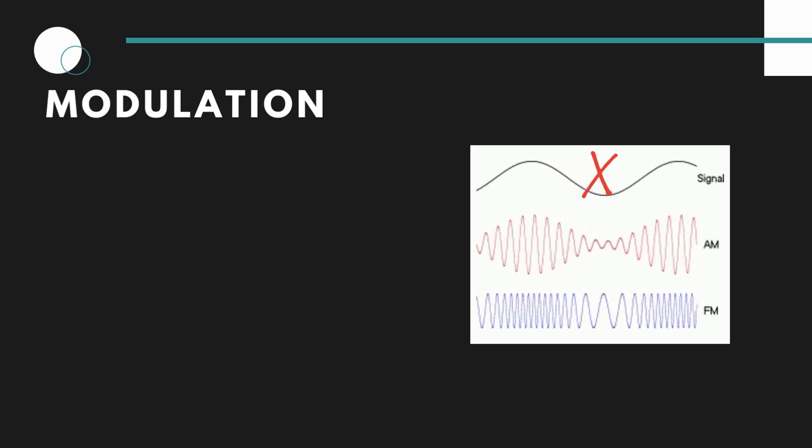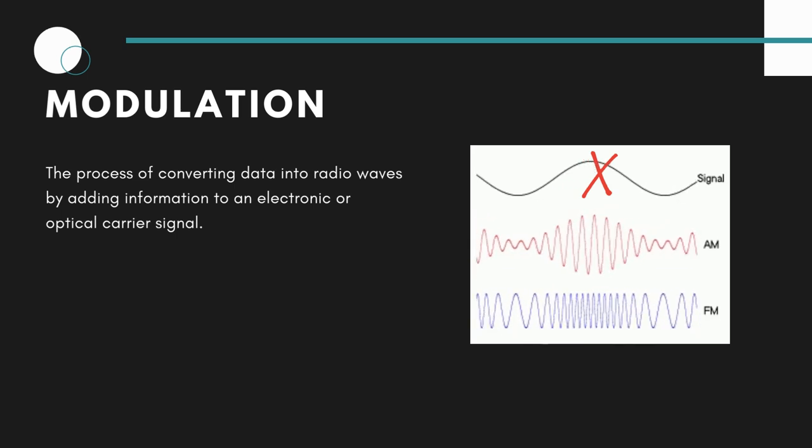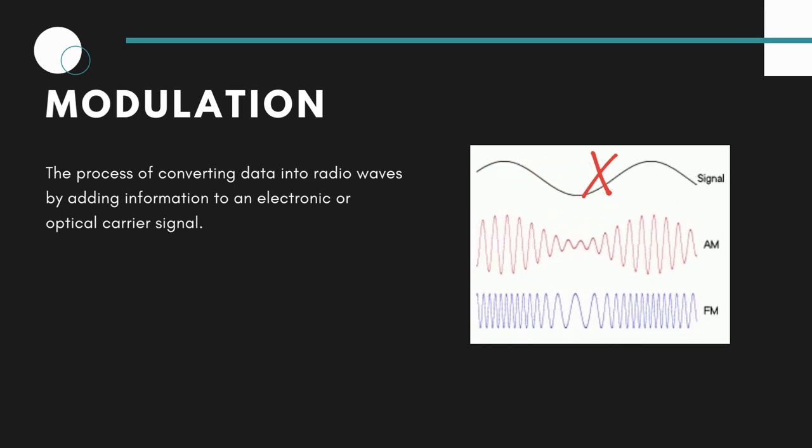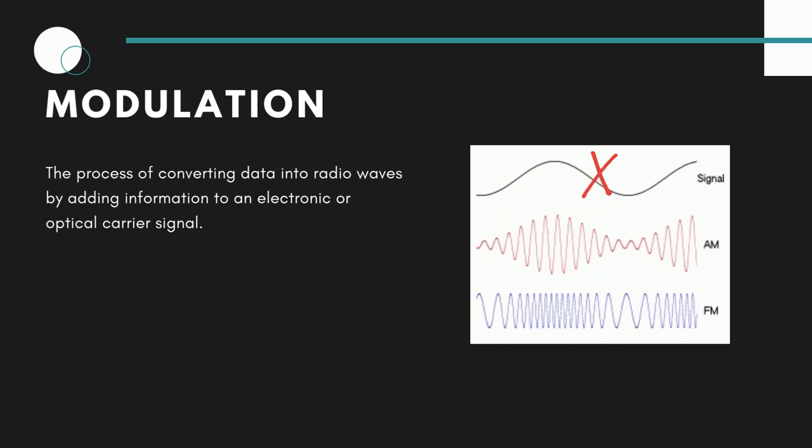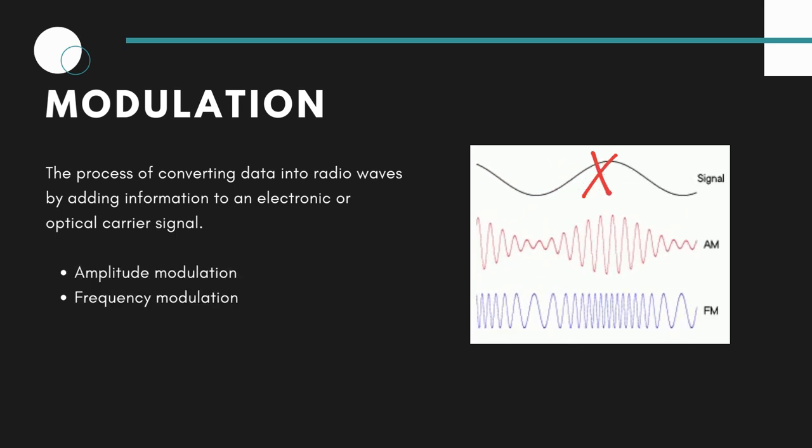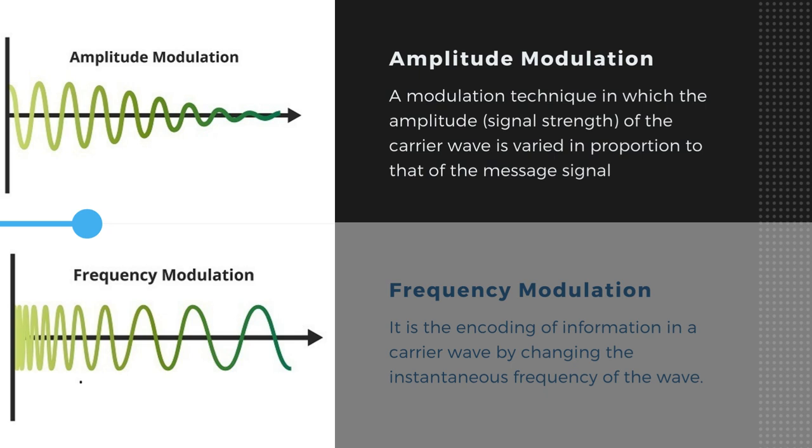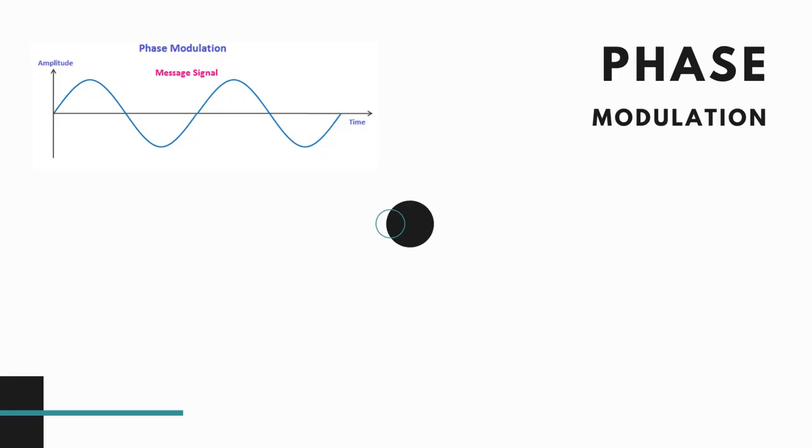Now we shall discuss the concept of modulation. A plane radio wave is of no use as it cannot be heard nor it can convey any information. Therefore, modulation is the process of converting data into radio waves by adding information on an electronic or optical carrier wave. There are two types of modulation. Amplitude modulation is a modulation technique in which the amplitude or the signal strength of the carrier wave is varied in proportion to that of the message signal. And frequency modulation is the encoding of information in a carrier wave by changing the instantaneous frequency of the wave.